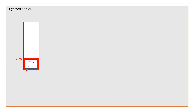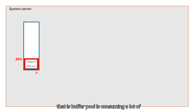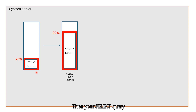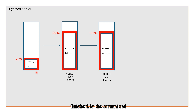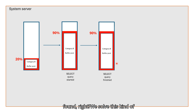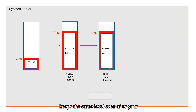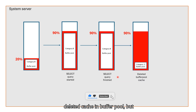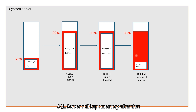Let me explain this. For example, SQL Server is acquiring 20% of system memory, and from this we found that the Buffer Pool component is consuming a lot of memory for caching data. As a result, system memory utilization spiked. Then your select query finished — is the committed memory released? No. SQL Server still keeps memory even after your select query finishes, because SQL Server keeps cache in memory for possible future use. Therefore, you see memory utilization remains at the same level even after your query finishes. Then we deleted cache in Buffer Pool, but SQL Server still kept memory after that also.